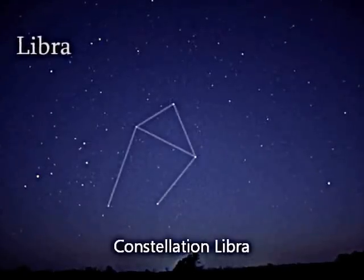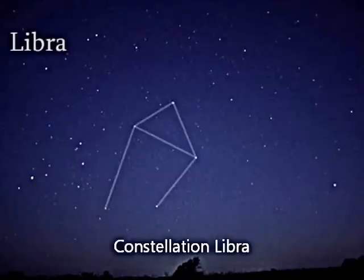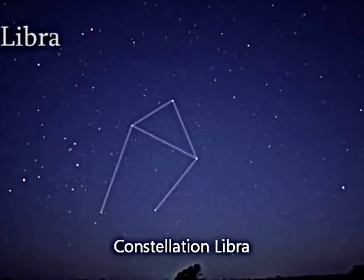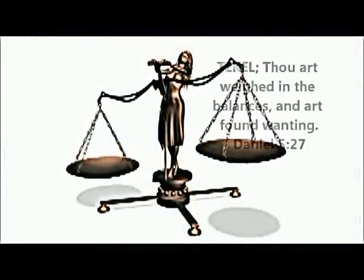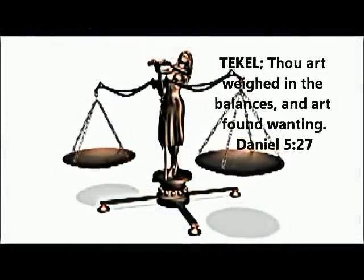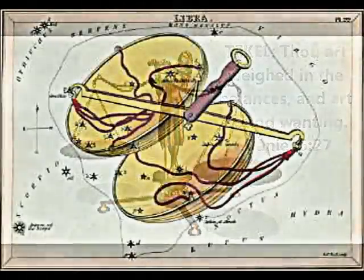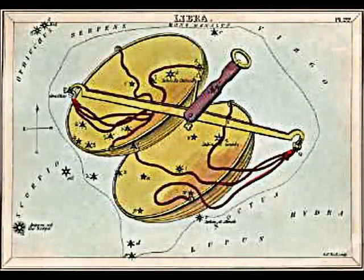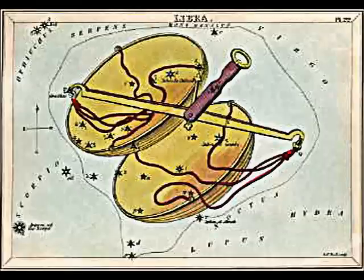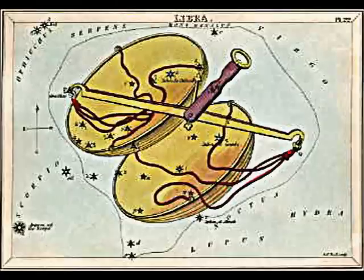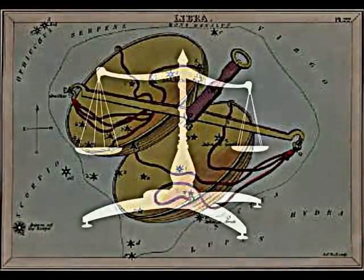Libra is interesting — Libra means 'the scales.' Daniel 5:27 tells us that when God spoke to Belshazzar, 'Thou art weighed in the balances and found wanting.' One of the stars in Arabic means 'the price deficient one' of the scales, showing the failure and condemnation of man. But the good news is that the other star means 'the price which covers the abundant one,' so Christ is placed in the scales to present us to God clean.